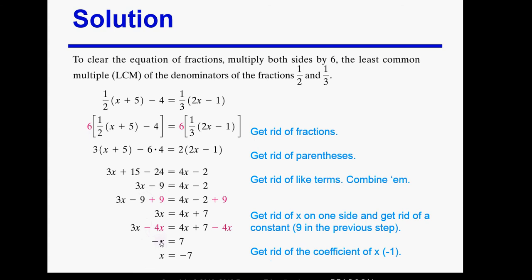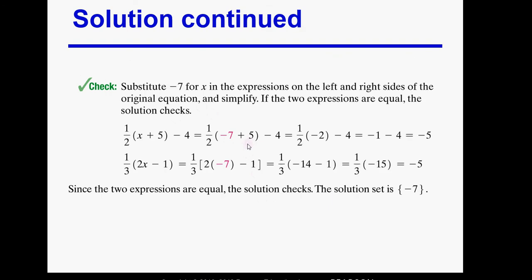We have a coefficient of x of negative 1, so we divide both sides by negative 1 to get x = negative 7. Checking: substituting negative 7 into the original equation, the left-hand side equals negative 5 and the right-hand side also equals negative 5, so negative 7 makes the equation true. A calculator check could also confirm this.